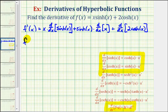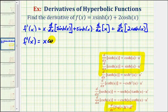So f'(x) is going to be equal to x times the derivative of hyperbolic sine x. Notice how this derivative formula does include the chain rule, but since u equals x and u' equals one, this derivative does not require the chain rule, so our derivative would just be hyperbolic cosine x, plus hyperbolic sine x.